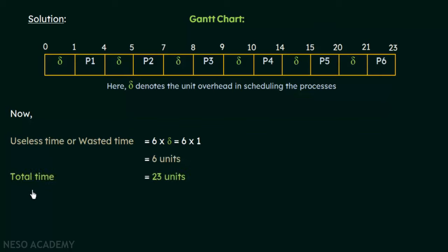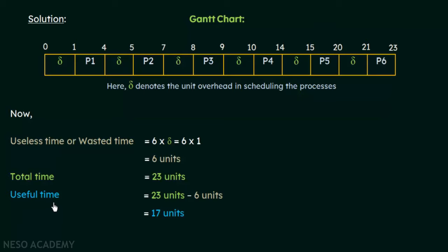Next, the total time taken for all processes to complete execution is 23 units, since P6 completed at the 23rd unit. The useful time is the total time minus the useless or wasted time: 23 minus 6 gives us 17 units. So the useful time is 17 units.